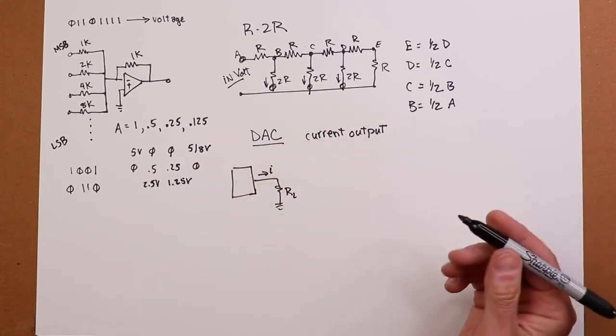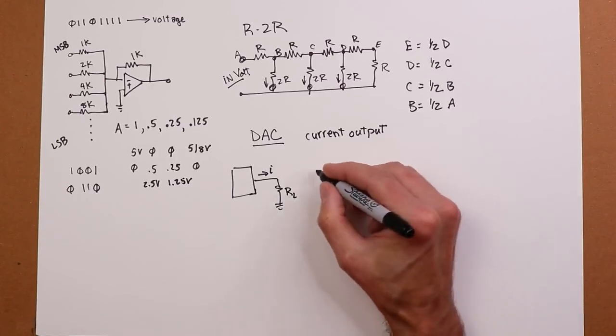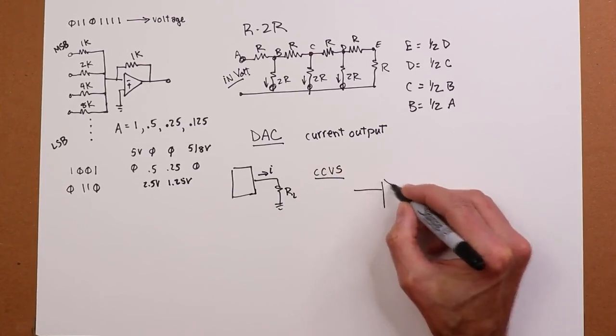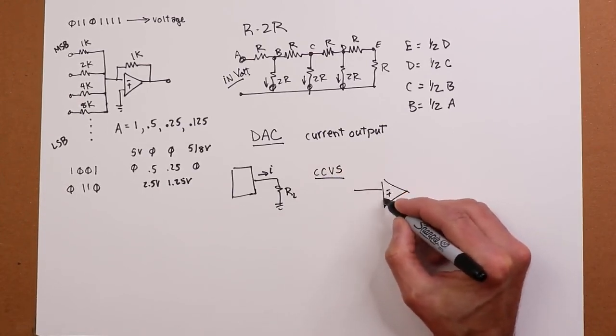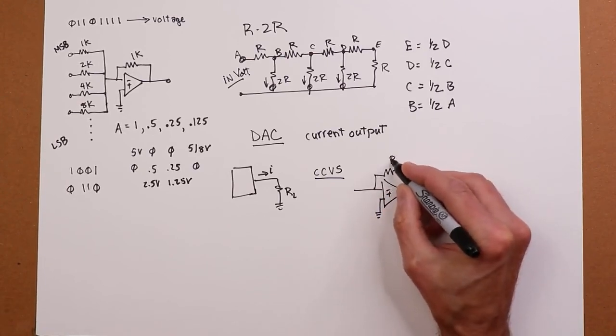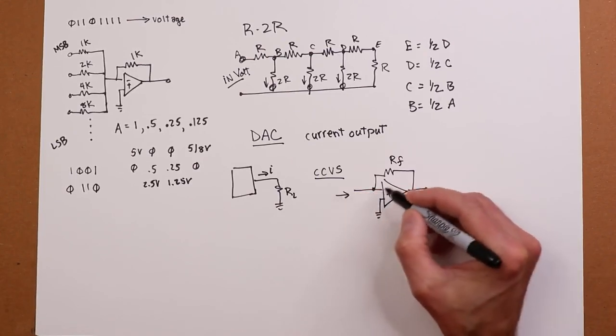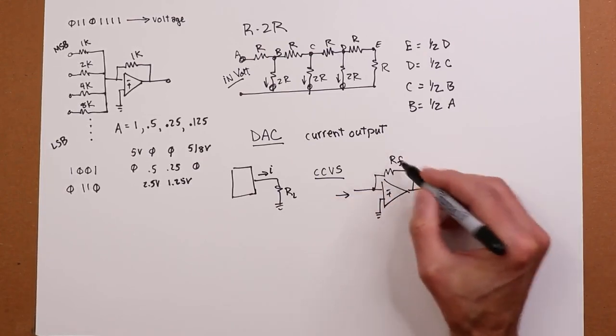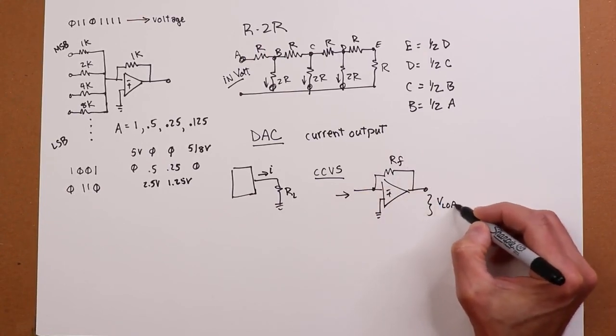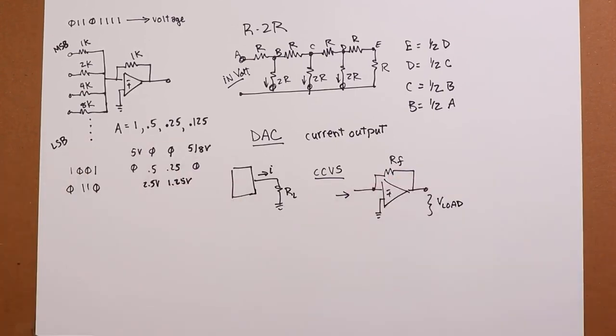So very often what we have to do is put a little transresistance amplifier, a current-controlled voltage source, out here. In other words, one of these guys. Basically a parallel-parallel. RF sets the transresistance. So this would be coming in from the DAC. This isolates this. This current comes through. This sets up the output voltage, and you get a nice constant V load out here. So that's a common configuration that we would use. There it is.